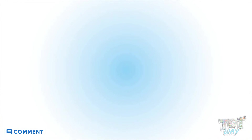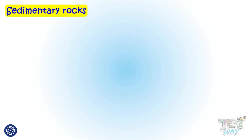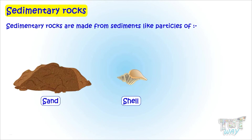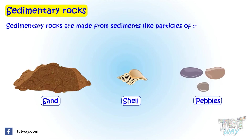Now let's learn about another type of rock known as sedimentary rocks. Sedimentary rocks are made from sediments like particles of sand, shells, pebbles, and other rocks. Let's learn how they are formed.